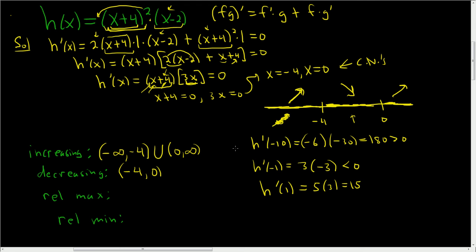For the relative max: the function is getting bigger then smaller at negative 4, so we have a max there. For the relative min: the function is getting smaller then bigger at 0, so we have a min there. So there's a max at x = −4 and a min at x = 0.